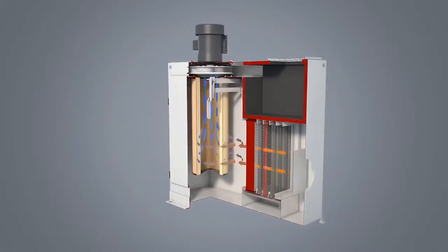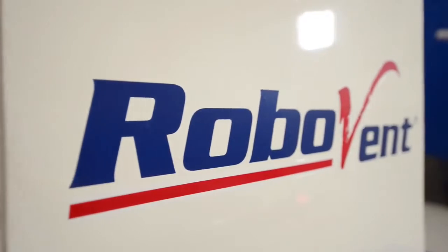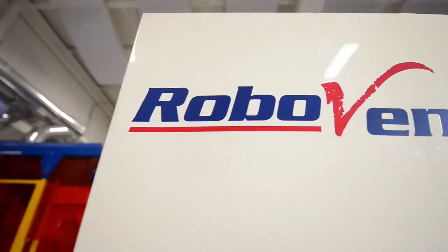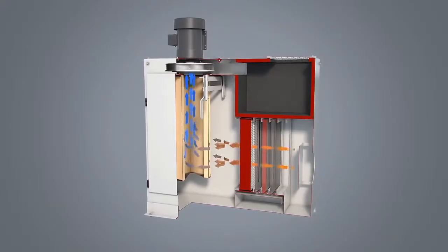The next two layers, the Z-PAC and the pleated cartridge, act as polishing filters, where any microscopic oil droplets and any microscopic smoke particles are removed, putting the final touches to the cleaning process.